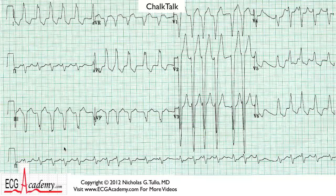As you scan across, you'll notice that the QRS complexes are clearly irregular. You've got longer intervals here, and much shorter intervals here. And if you try to extract a pattern out of it, you might not be able to appreciate any kind of pattern.